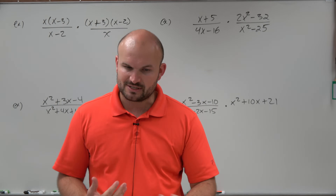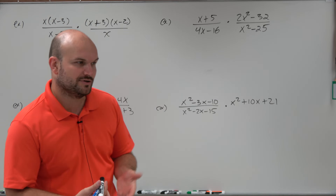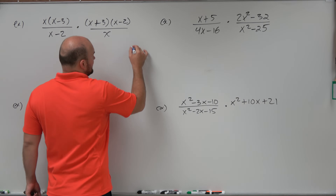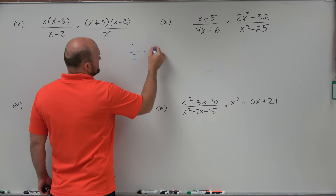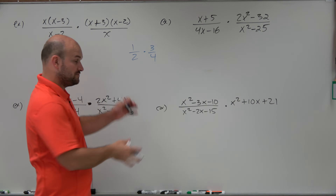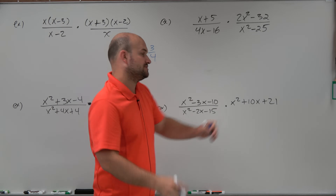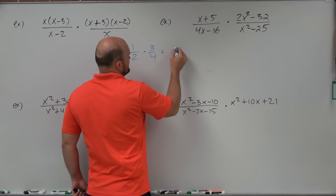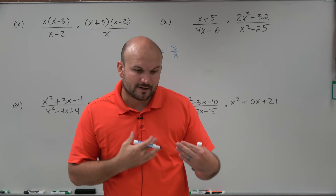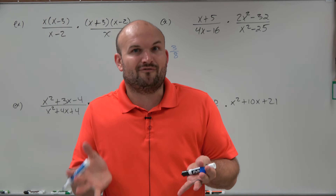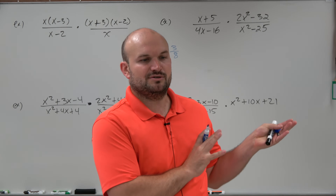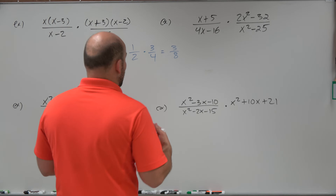It's important when dealing with rational expressions to remember a couple of things about multiplying with fractions. Back in the day, we learned 1/2 times 3/4. When multiplying fractions, we're basically just multiplying straight across — 1 times 3, and then 2 times 4 equals 3/8. However, the main important thing about fractions is always to simplify.